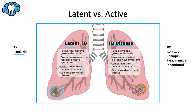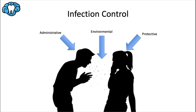People with active TB disease are sick from tuberculosis bacteria that are actively multiplying and destroying tissue in their lungs. They usually have symptoms including coughing, loss of appetite, night sweats, bloody sputum, chest pain, fever, and fatigue. These people can spread TB bacteria to others through droplet nuclei and are prescribed a regimen of isoniazid plus three additional drugs.